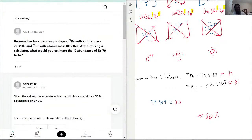So the percent abundance of Br-79 would be an estimate of 50%. And hopefully you saw how I was able to do that.